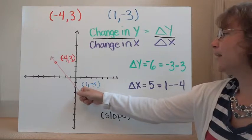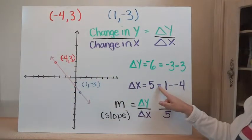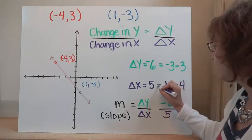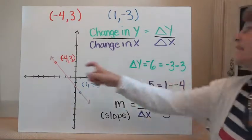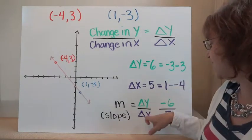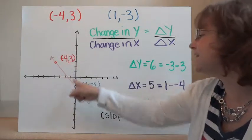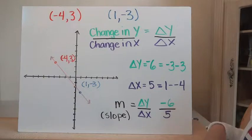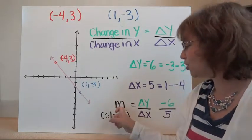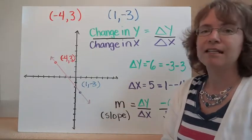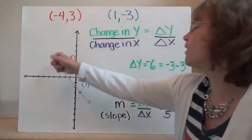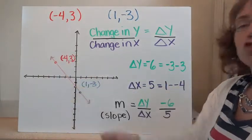We can also use the ending point minus the starting point: one minus negative four gives us five. So our change in y over our change in x is negative six over five — a negative slope, which is what we'd expect. Also, slope is often represented using the letter m. So if you ever see m in a textbook, that's what it means. Our slope here means for every negative six we fall, we run five, and that's true all along that line.